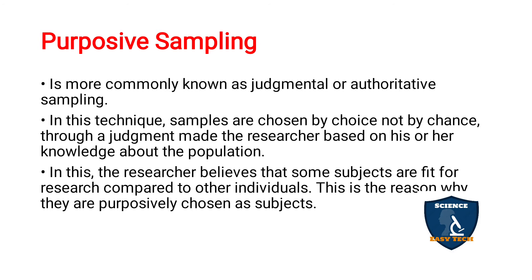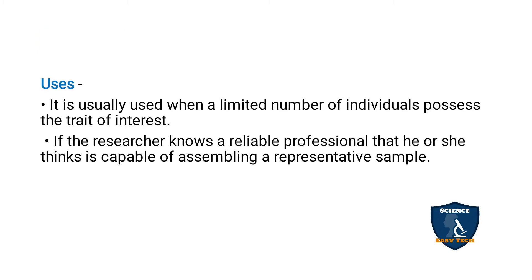Purposive sampling is more commonly known as judgmental or authoritative sampling. Here, samples are chosen by choice, not by chance. According to the judgment of the researcher, whomever the researcher wants to get involved in the study, based on his knowledge and judgment, he takes the samples purposefully. The researcher believes that some subjects are more fit for the research compared to others — that is the reason why they are purposefully chosen. For example, in a class of 50 students, the teacher selects students considered intelligent or average for the research study.